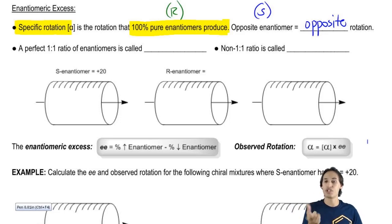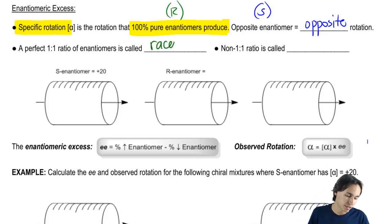So a perfect 1:1 ratio of enantiomers, meaning that I have 50% S and 50% R, is called racemic. And that's very important. That's such an important word for chemistry, you can never forget that.